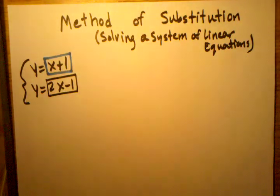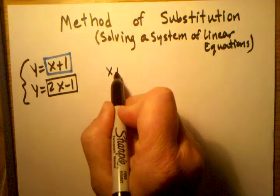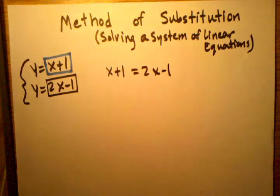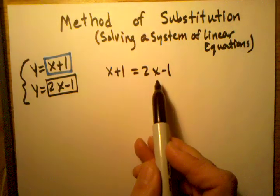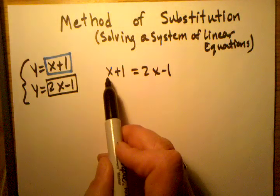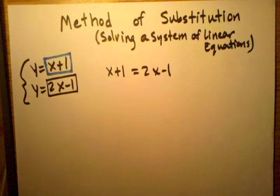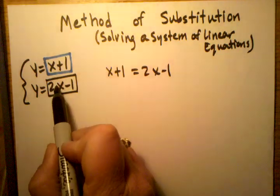So simply writing them out as x plus 1 equals 2x minus 1 gives us an equation that we now can balance out and solve for x with. Because there's only one variable, if we move all the numbers around in all the balanced ways that we know how to solve for x, we can find out what x is and then we can plug the number in for x back into one of these equations to find out what y is.